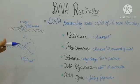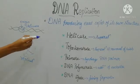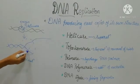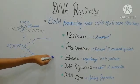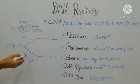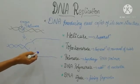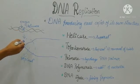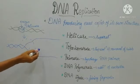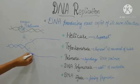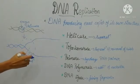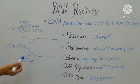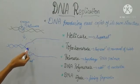The next enzyme is topoisomerase. This topoisomerase will separate the DNA away from the replication fork. It also removes the twist. We know that DNA is a spirally coiled structure, so when the double strand DNA separates into single strands, a twist forms. That twist is removed by the topoisomerase enzyme. So topoisomerase separates the DNA strand away from the replication fork and removes the twist formed during unwinding.